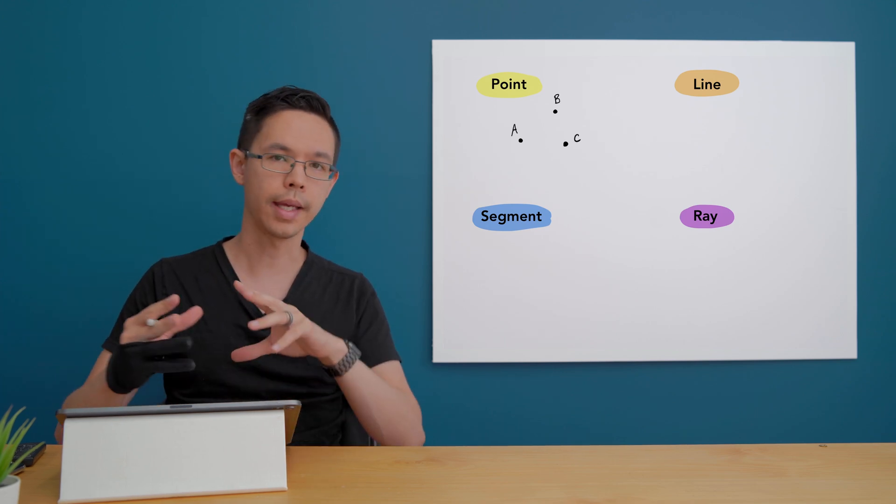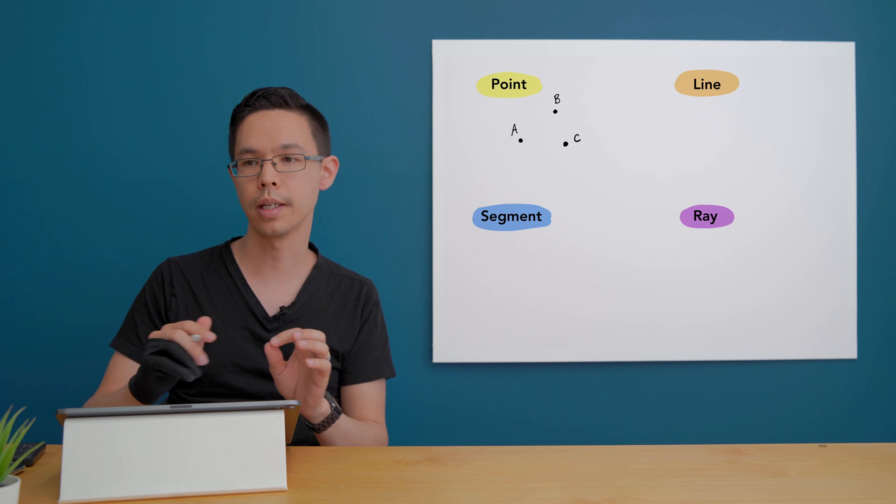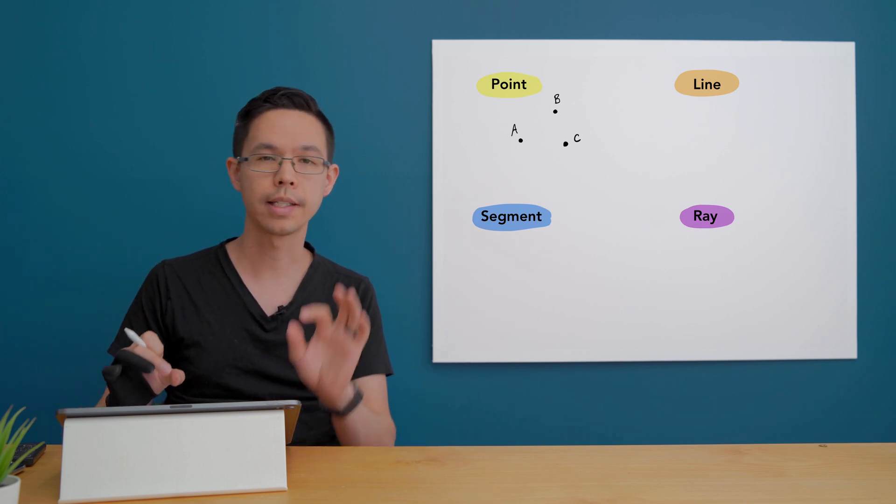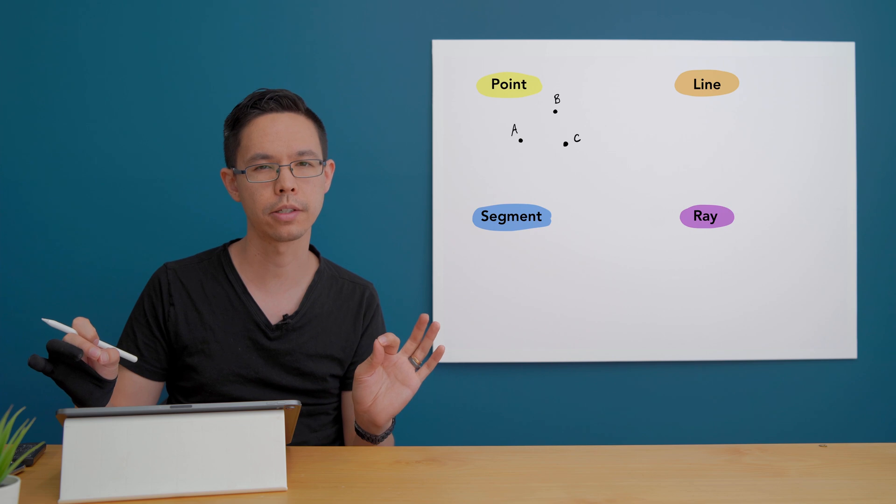A line is a geometric object that extends forever in a straight path and it's infinitely thin so it has no thickness to it at all.